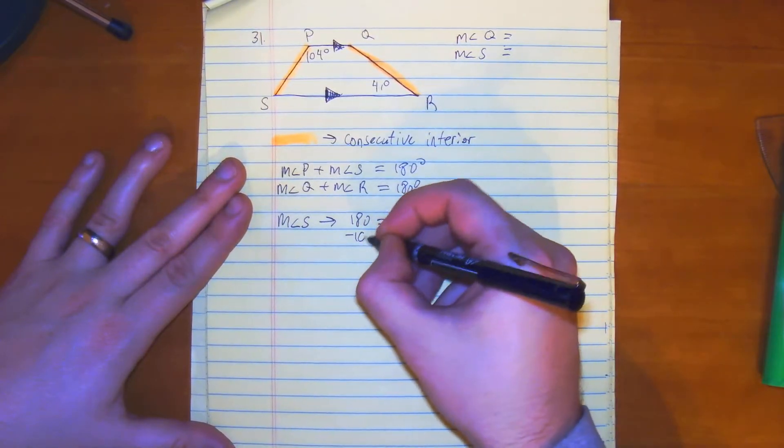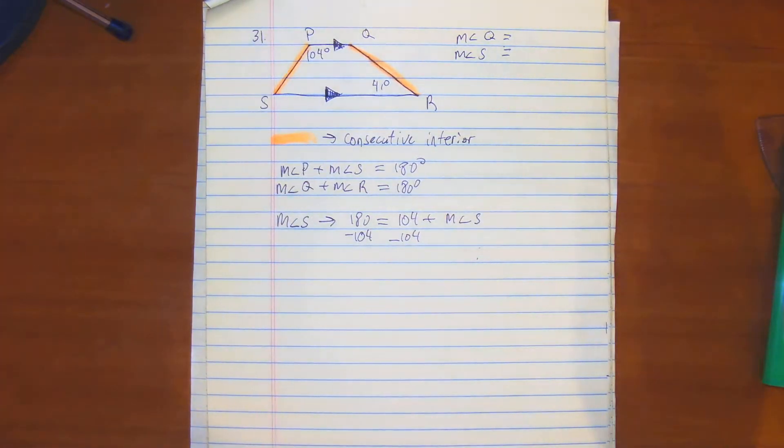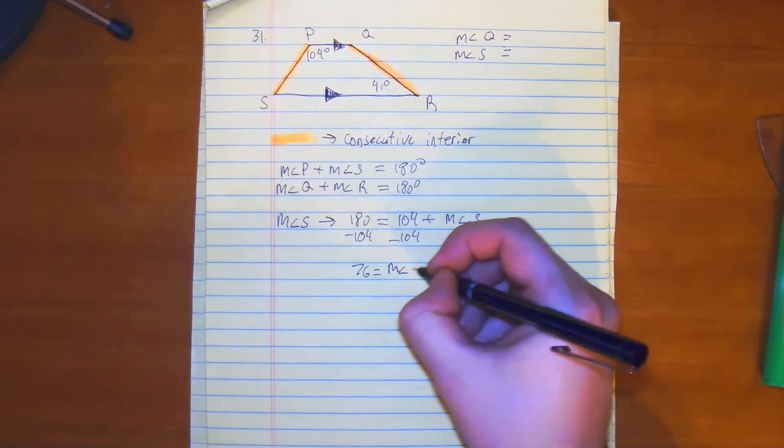Subtract 104 from both sides. So you would get 180 minus 104 would be 76. So 76 is equal to the measure of angle S.